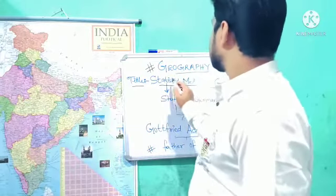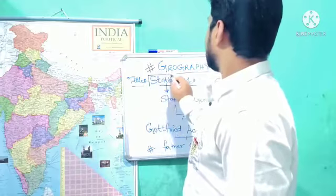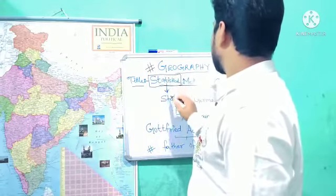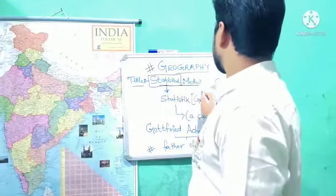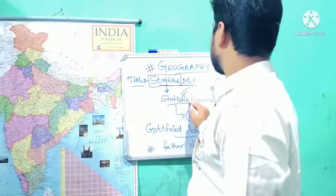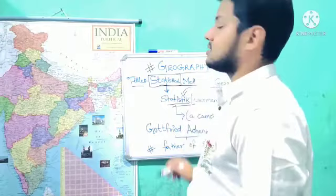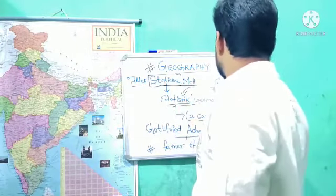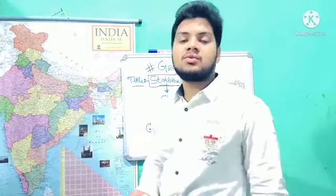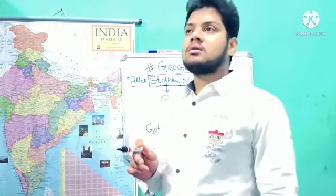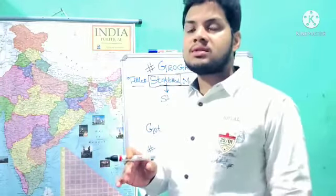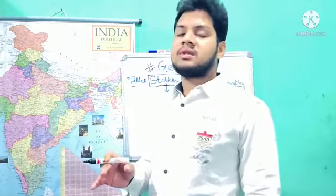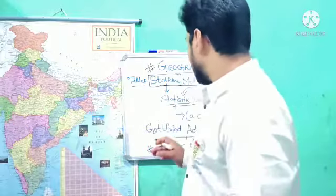The word 'statistics' comes from the German word 'statistic'. The meaning of 'statistic' in German relates to a council of ministers. In political science, we study that a council of ministers sit together, hold meetings, and conduct various activities in those meetings.